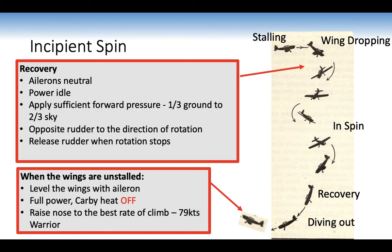Incipient spin recovery: ailerons neutral, power idle — as power can cause it to stall further, apply power later. Apply sufficient back pressure two-thirds ground one-third sky, and opposite rudder to the direction of rotation. If rotating anti-clockwise to the left, apply right rudder and release when rotation stops. Then level the wings with aileron, full power, carb heat on, raise nose to the best rate of climb attitude to avoid further loss of height. You must memorise this — it is a memory item.